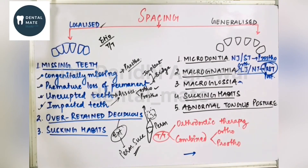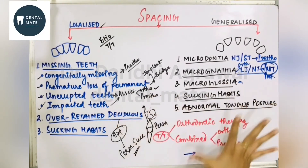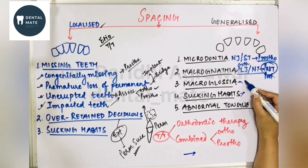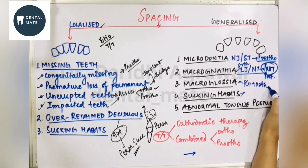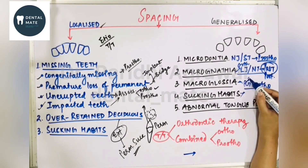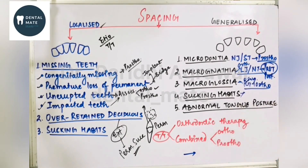Next cause of generalized spacing is macroglossia — an unduly large tongue. Due to tongue pressure and force, the teeth flare outward, causing generalized spacing. The lateral borders of the tongue show crenations and indentations. Unless the malocclusion is very gross, glossectomy or tongue reduction surgery is not advisable. Otherwise, partial glossectomy can be done, along with orthodontic treatment to reposition the flared teeth. So this is a combined surgical and orthodontic approach.